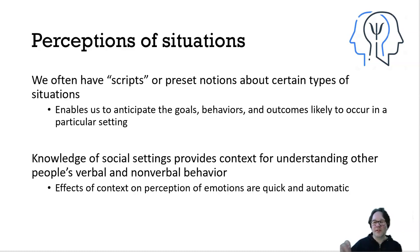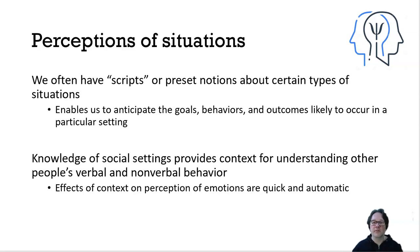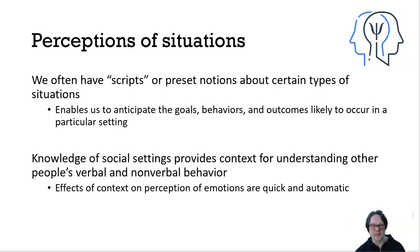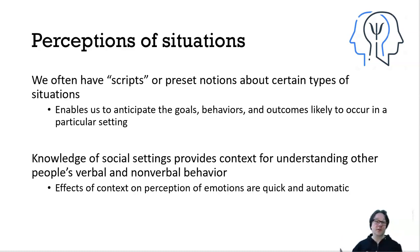The way we perceive people's behavior is often related to the situation or context in which we're observing. This is where the notion of perceptions of situations comes in. We often have scripts — preset notions about certain types of situations — like a screenplay with a storyline about how things are supposed to go. If we go to a grocery store checkout, we have a script for how that procedure is supposed to happen.